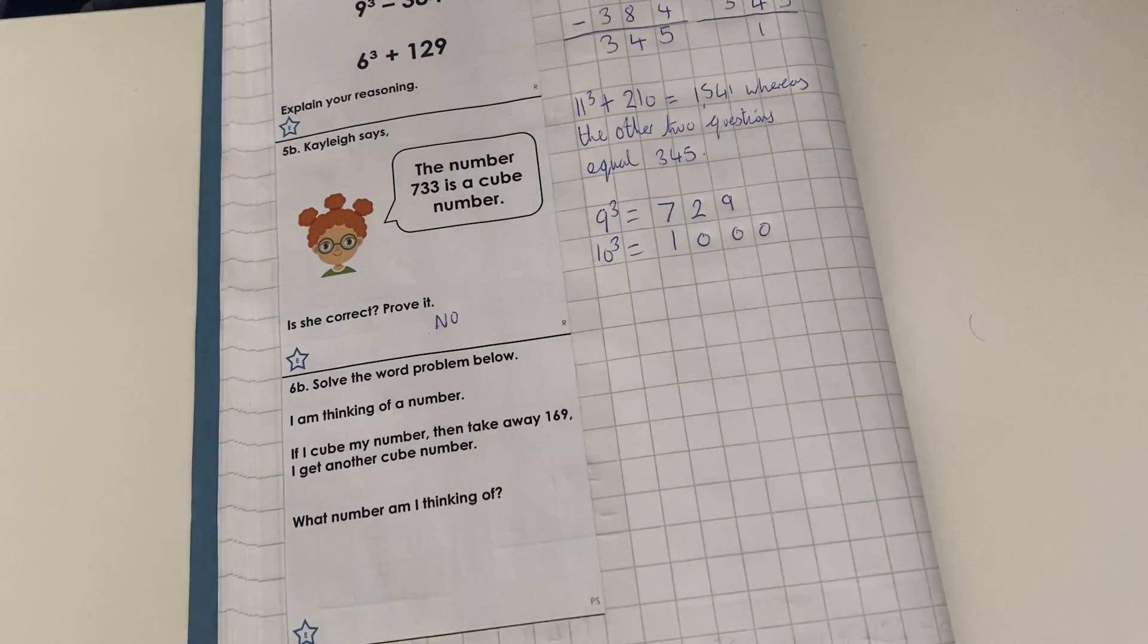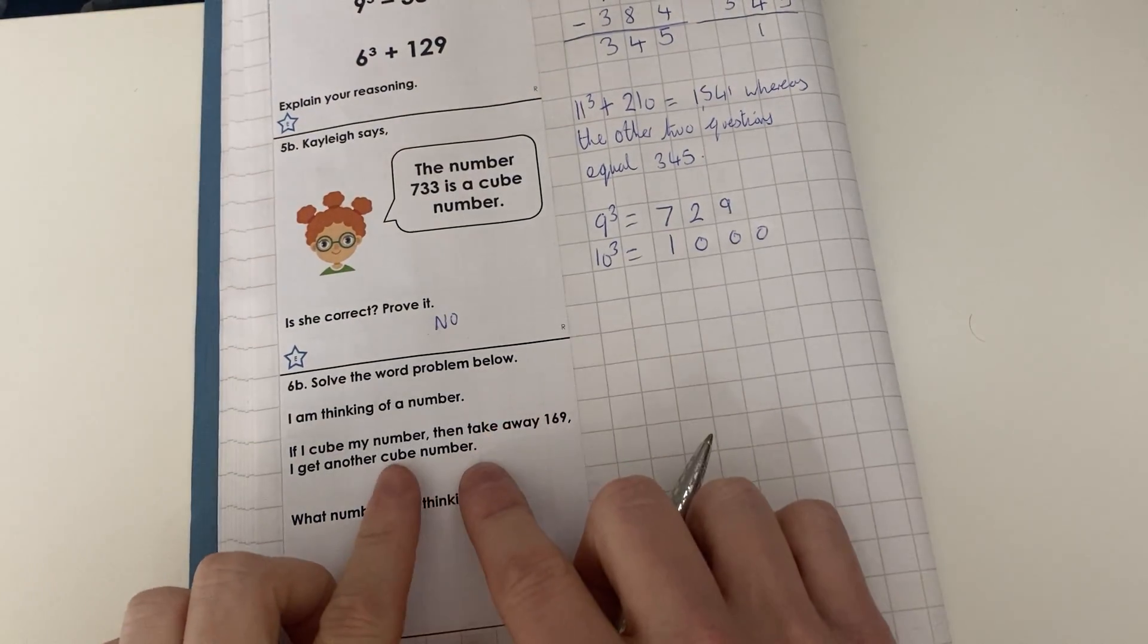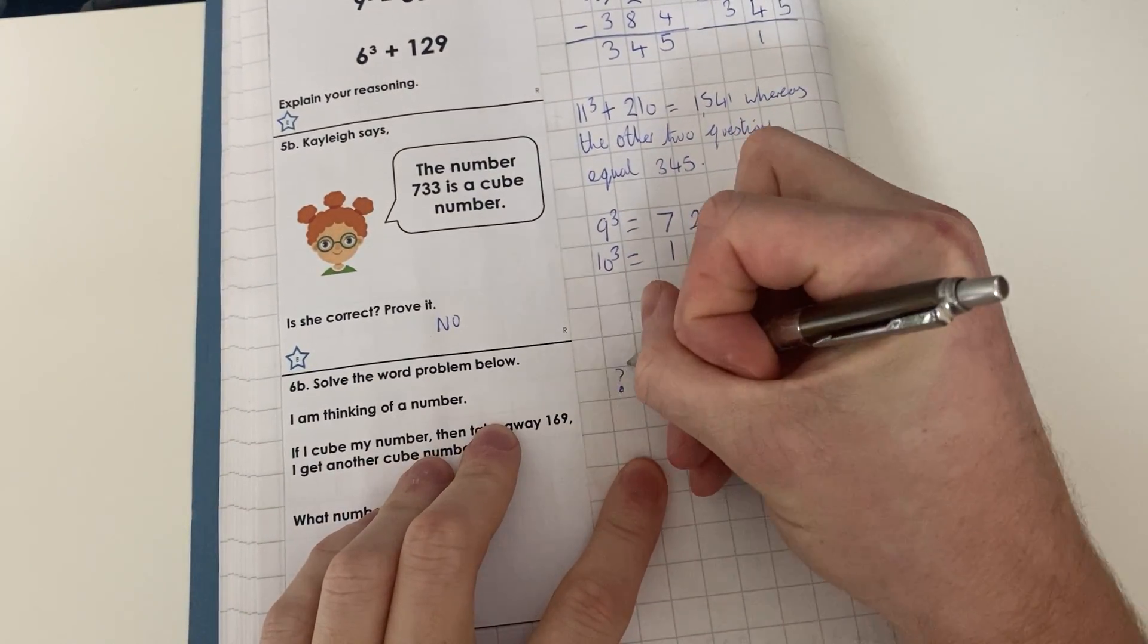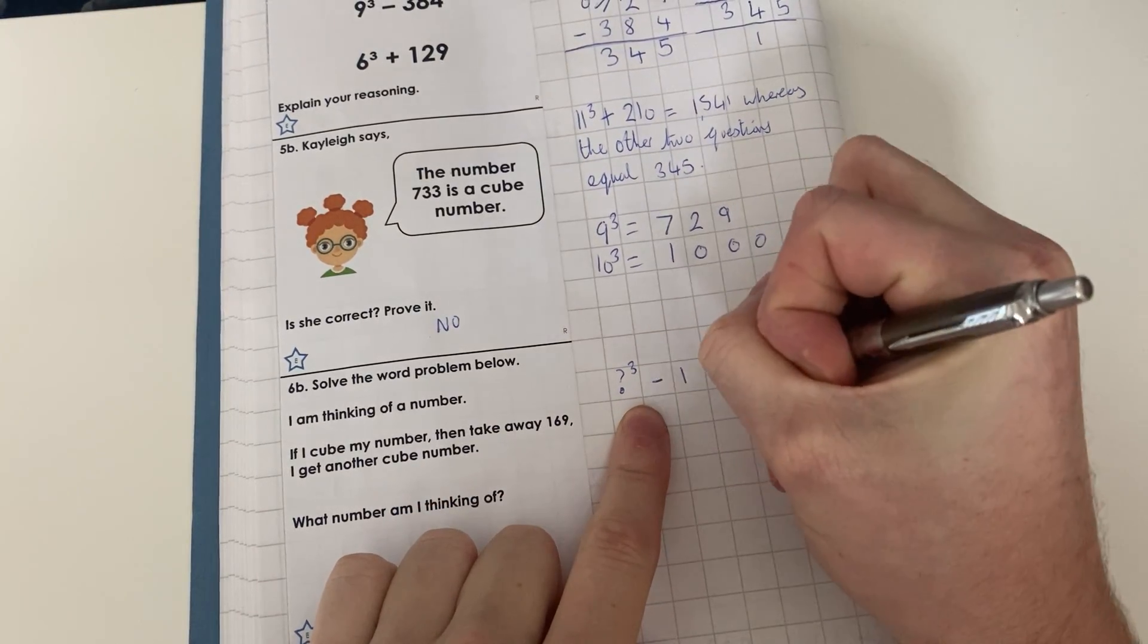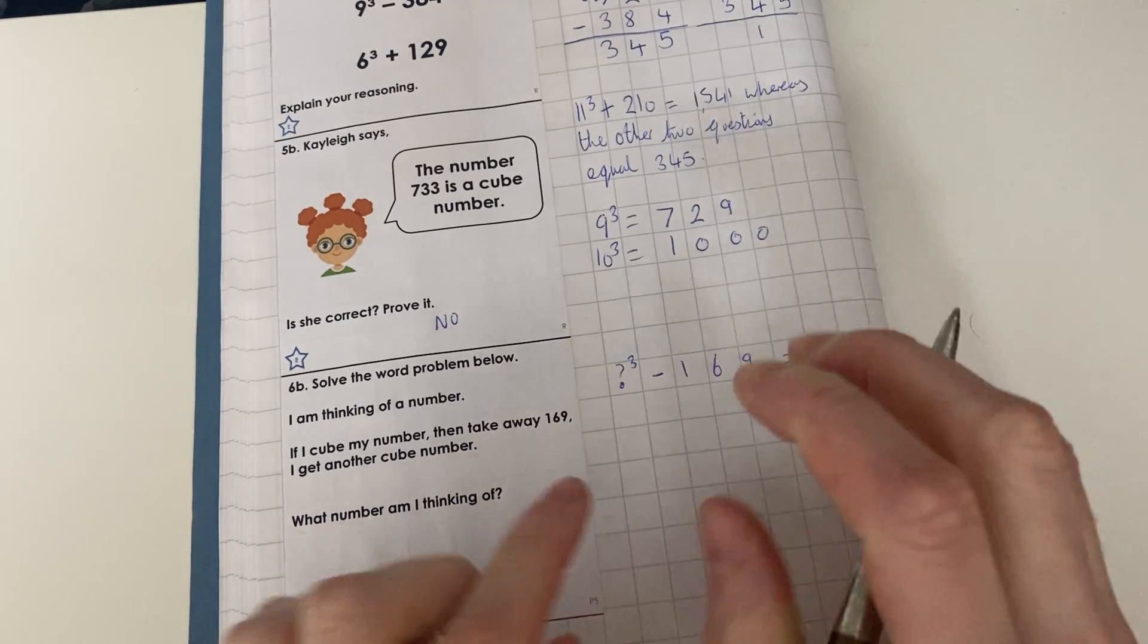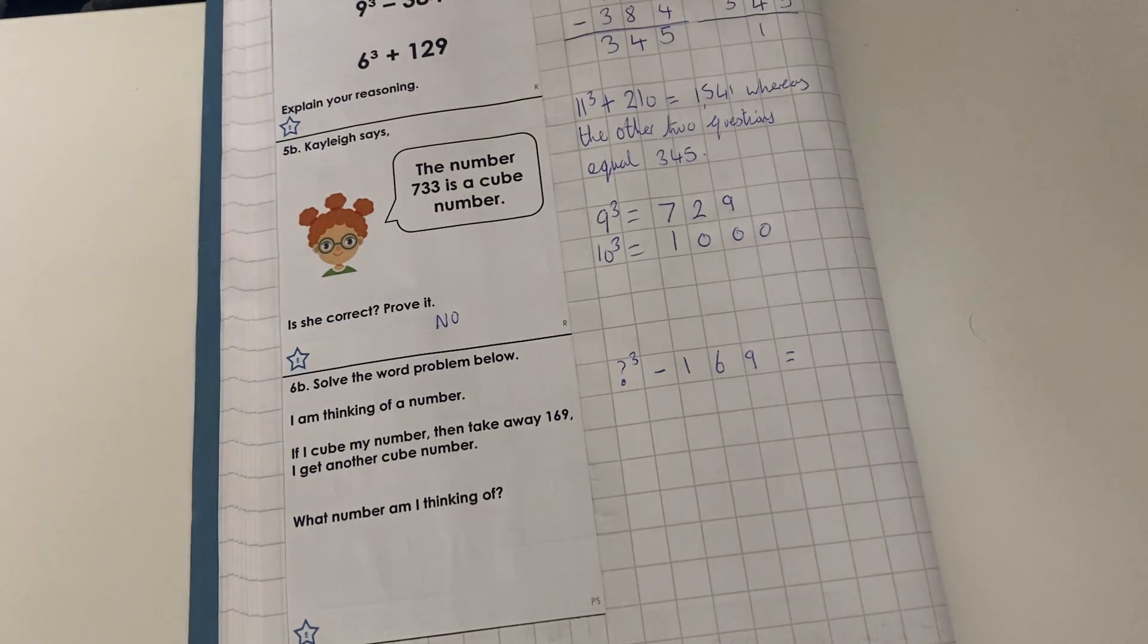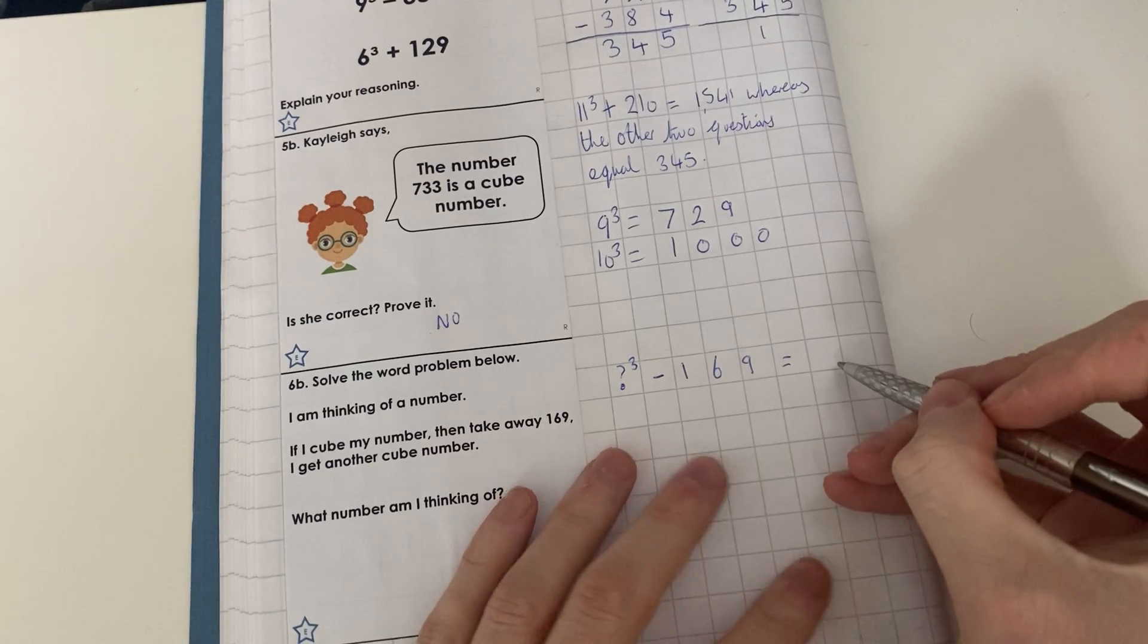Now the first thing we want to do, children, is we need to find—so it's asking us to find a number. We cube it, we then take 169 away from it, and then we get another cube number. So an answer of a cube number, so for example 64, because 64 is 4³. So this must be a cube number.